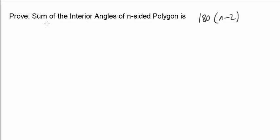In this video, we want to prove that the sum of the interior angles of n-sided polygons is 180 times n minus 2. Let's start by doing it step by step.